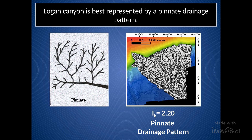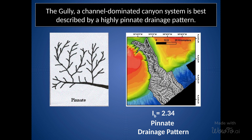Logan Canyon is best represented by a pinnate drainage pattern, characterized by a moderate stream frequency and moderate bifurcation ratio, indicating a moderately connected drainage network. The branching index for Logan Canyon was calculated to be 2.20. The Gully, a channel-dominated canyon system, is best described by a highly pinnate drainage pattern, characterized by a high stream frequency and low bifurcation ratio, indicating a complex and well-connected drainage network. The branching index for the Gully was calculated to be 2.34, higher than the other two canyons, indicating a more complex drainage network.